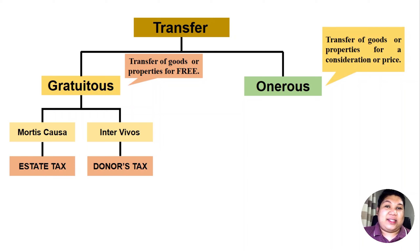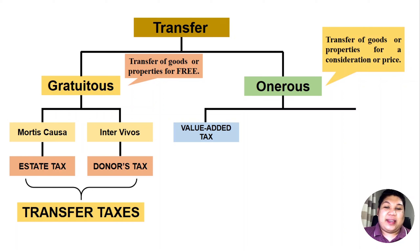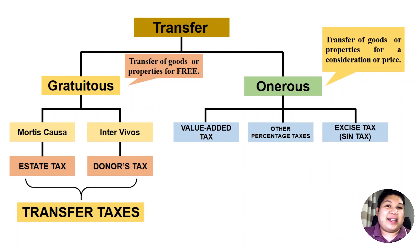These two taxes — the estate and donor's taxes — are called transfer taxes. On the other hand, onerous transfers could be classified into three: it could be subject to value added tax, other percentage taxes, or excise taxes. Later on in our succeeding videos, we will discuss these three items.